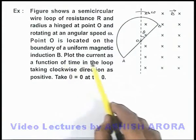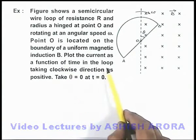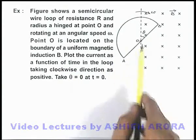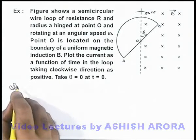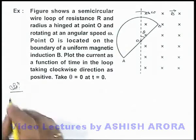The problem asks to plot the current as a function of time in the loop, taking clockwise direction of current as positive. We need to take theta equals zero at t equals zero.